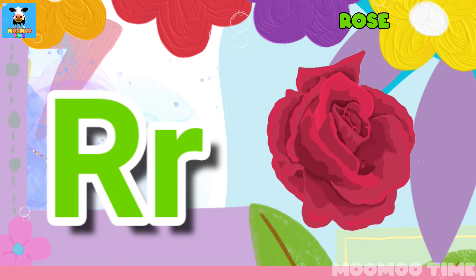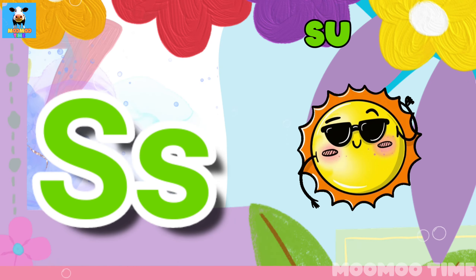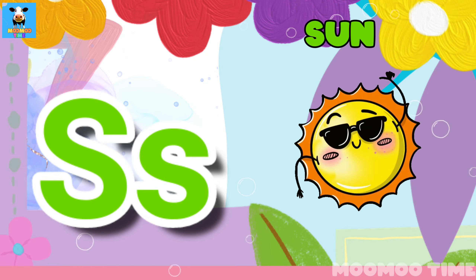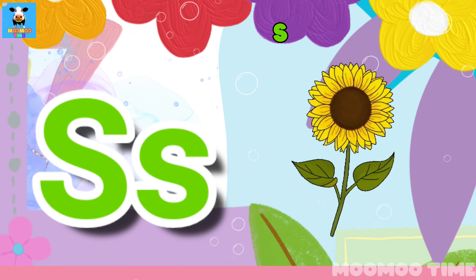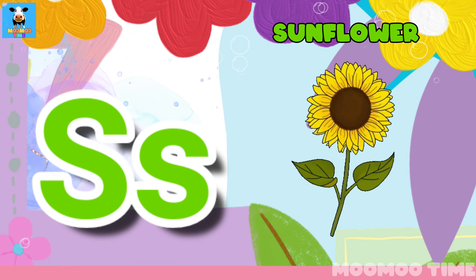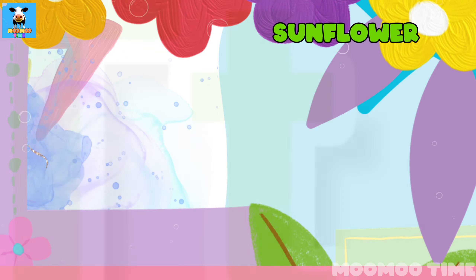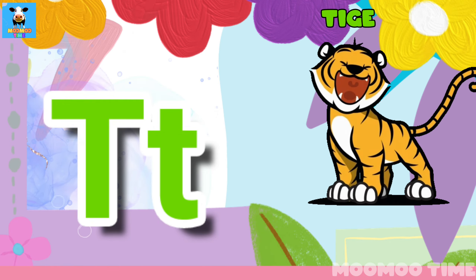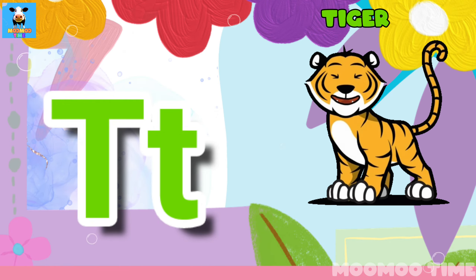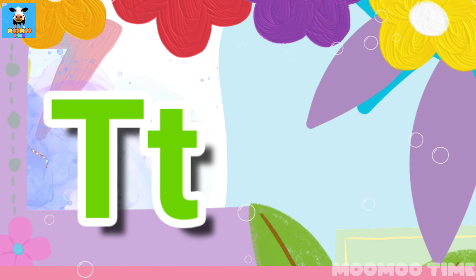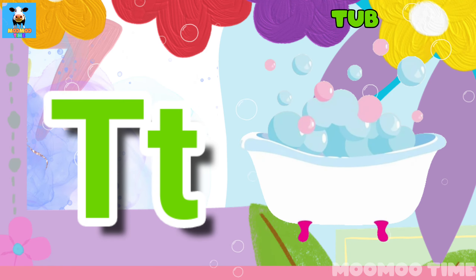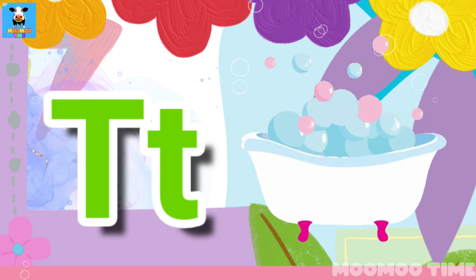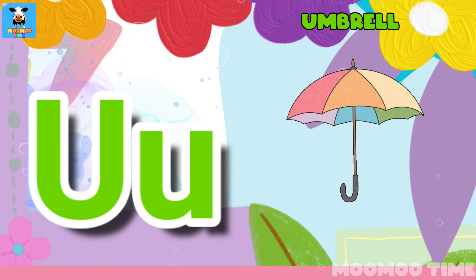R for rose, S for sun, S for sunshine, G for tiger, G for duck, U for umbrella.